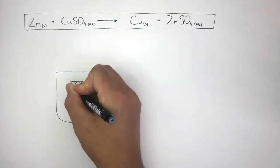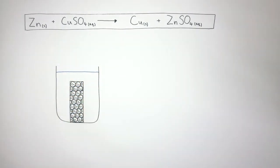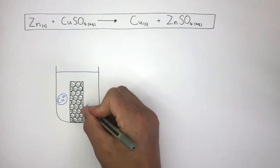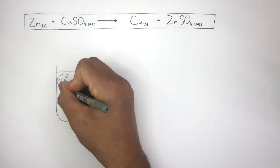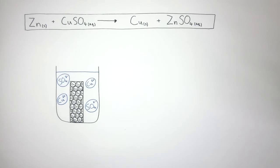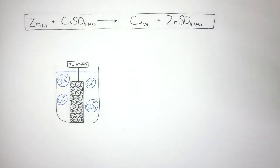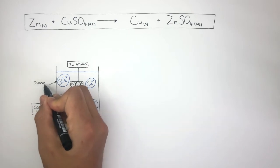In this particle diagram, these circles represent zinc atoms — I'm writing Zn in every circle to represent that each circle is a zinc atom. Here I'm writing Cu²⁺ and SO₄²⁻ to represent the copper and sulfate ions, which are free to move in the copper sulfate solution. This represents a copper ion, and this represents a sulfate ion.